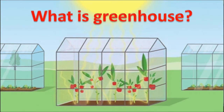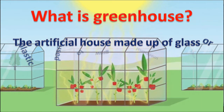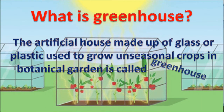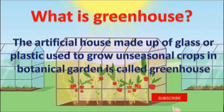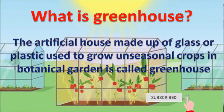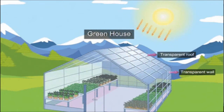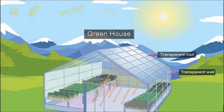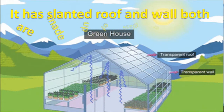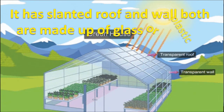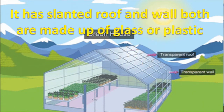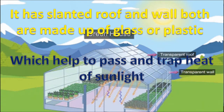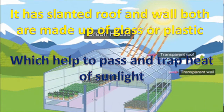What is a greenhouse? The artificial house made up of glass or plastic, used to grow off-seasonal crops in a botanical garden, is called a greenhouse. It has a slanted roof and walls, both made up of glass or plastic. It allows passage of sunlight inside the greenhouse and traps it inside, which helps to pass and trap the heat of sunlight.